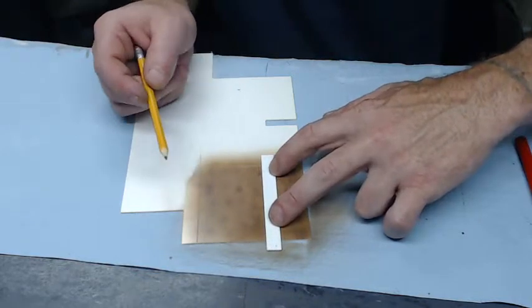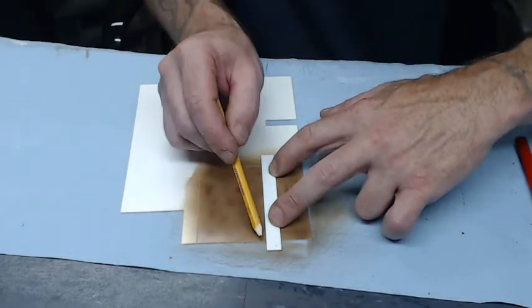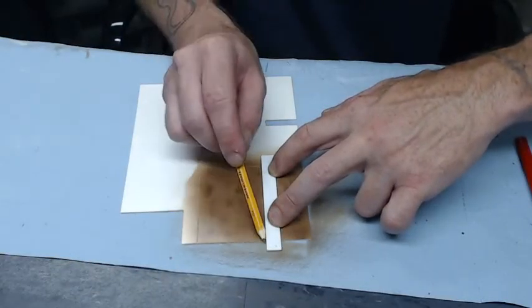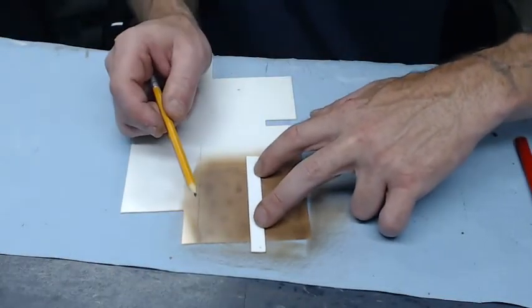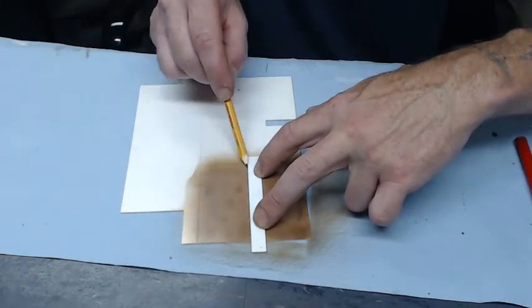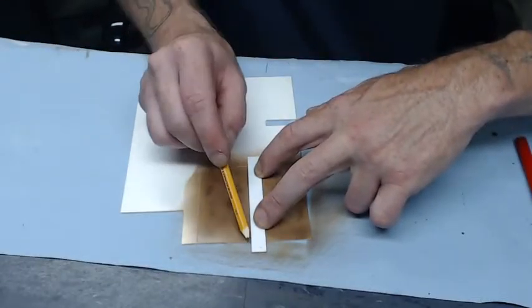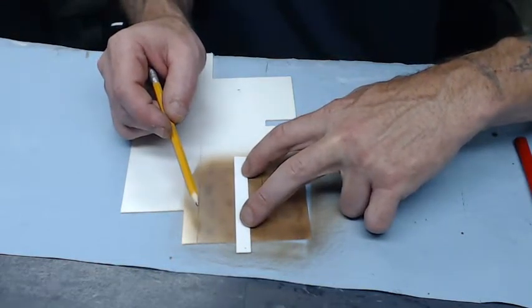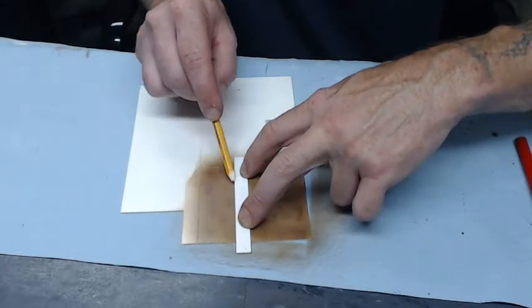Then we're just going to slide it over, line it back up against your line you just made. Same thing, you don't want to put a lot of pressure on the pencil, just enough to make your mark. We'll go ahead and do this all the way across so when we're done it represents a hardwood floor.